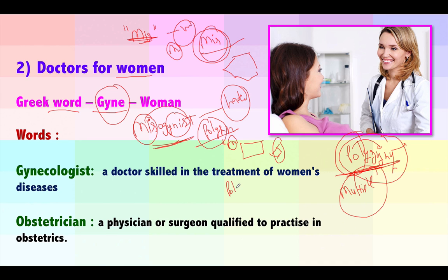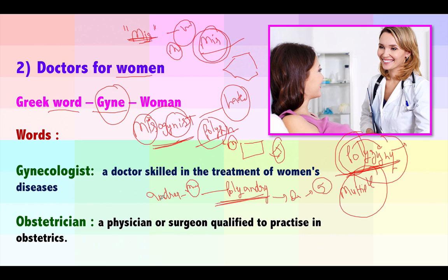Similarly, the opposite is polyandry. In the Mahabharata, Draupadi had five husbands — she was practicing polyandry, the complete opposite of polygyny. This word comes from 'andros' meaning men. So 'andro' and 'gyne' are completely opposite — they mean men and women respectively.